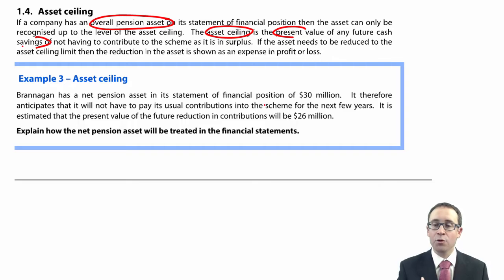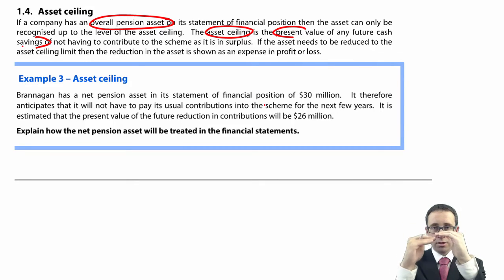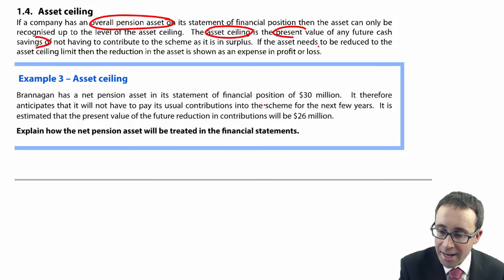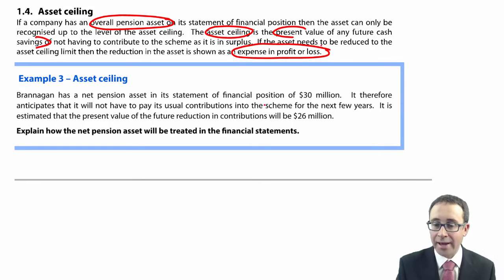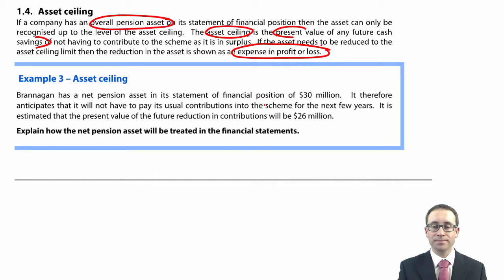You don't have to calculate the asset ceiling — you'll be given it within the exam. If the value of the asset in the financial statement is above the asset ceiling, you need to reduce the value of the pension asset to the asset ceiling. A reduction in asset has to be an expense and it would go through profit or loss — it's a real life expense.